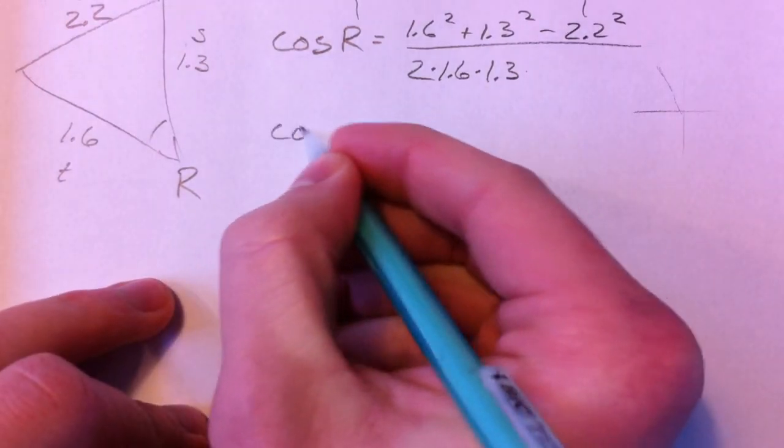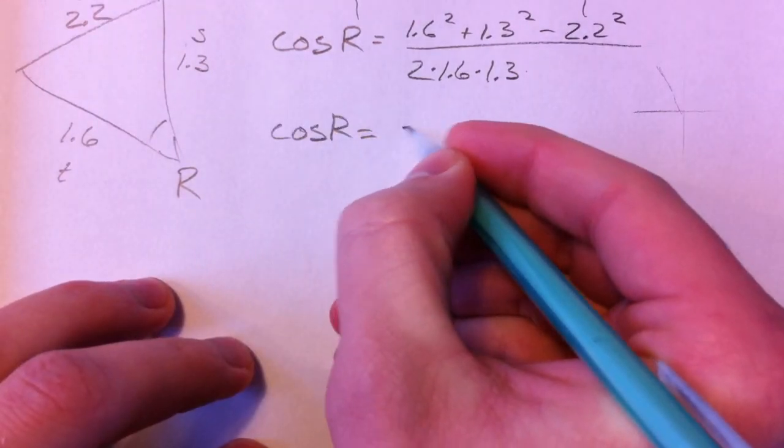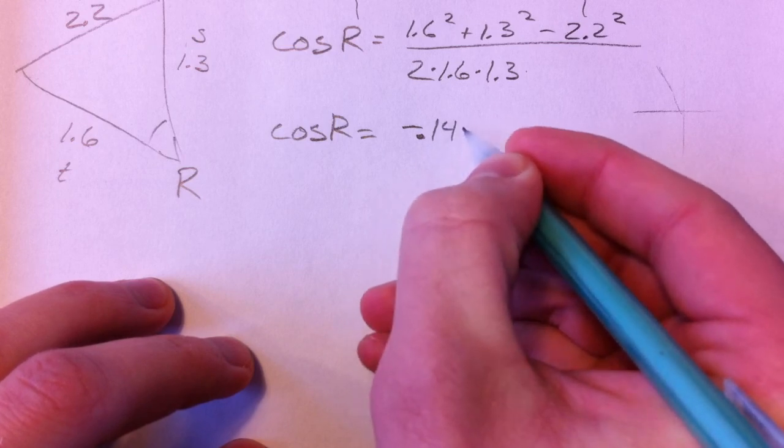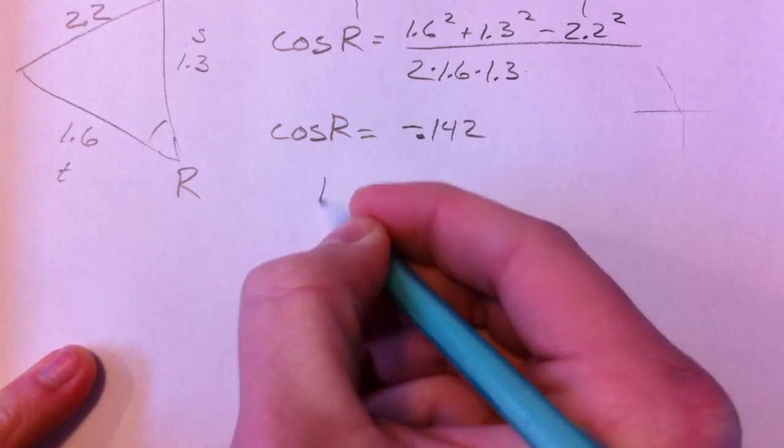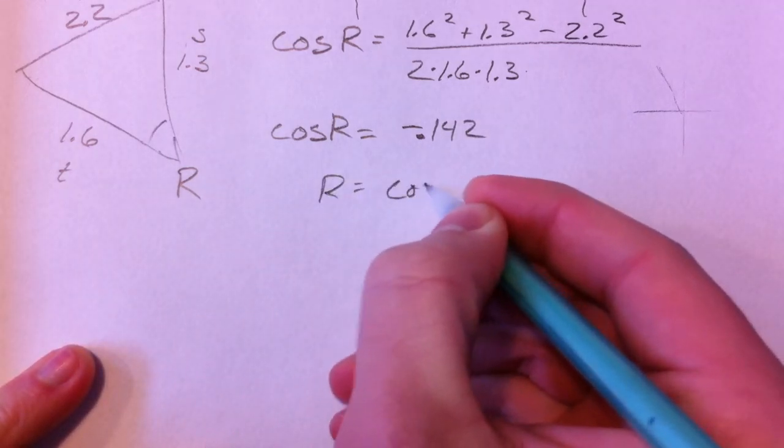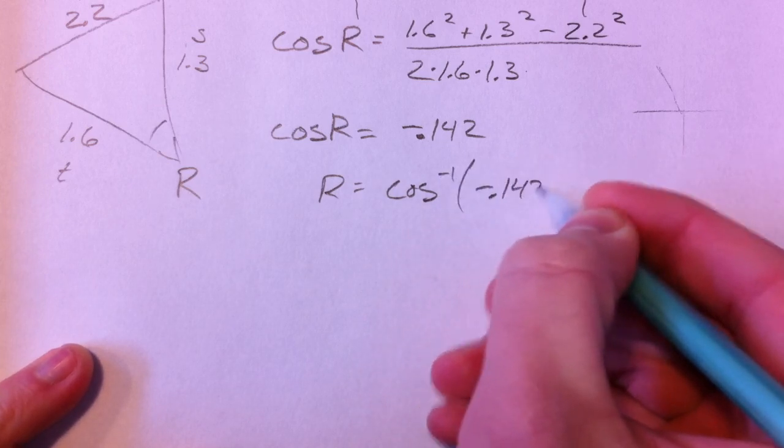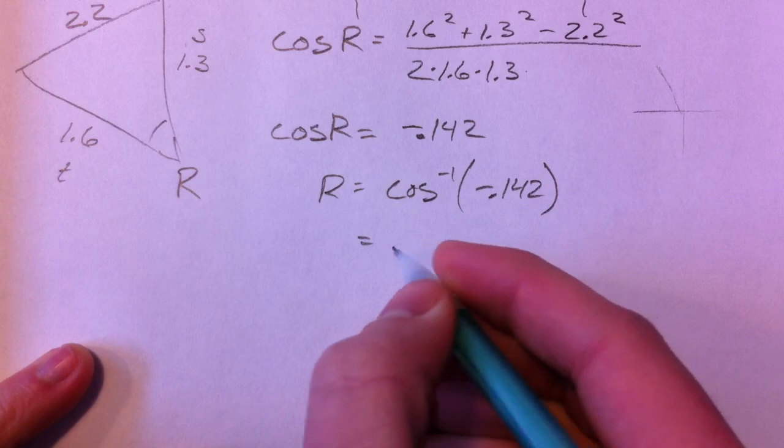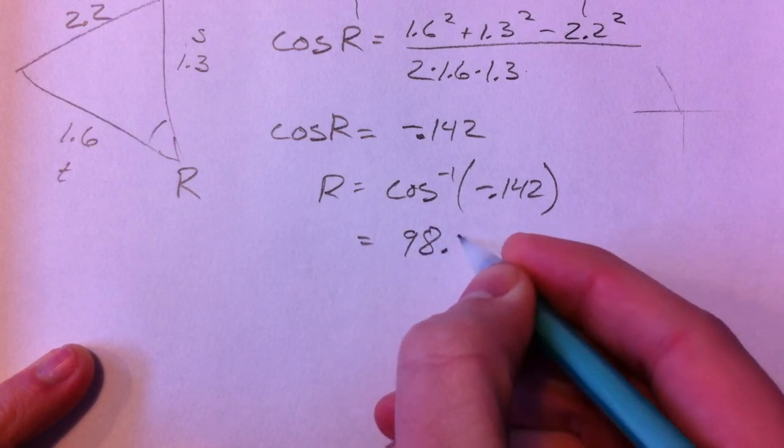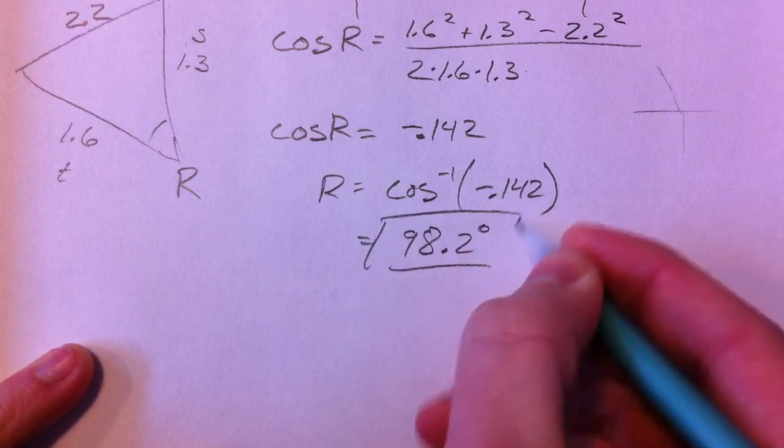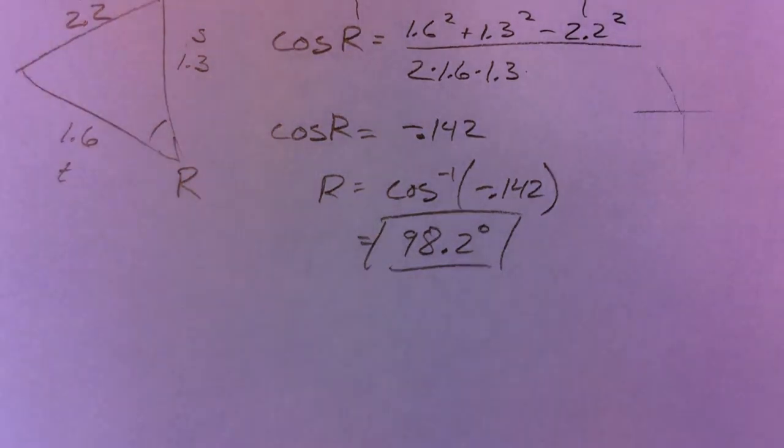So cosine of our R was negative .142. And so that meant inverse cosine of negative .142. Again, you're in degrees, 98.2 degrees. That's the law of cosines.